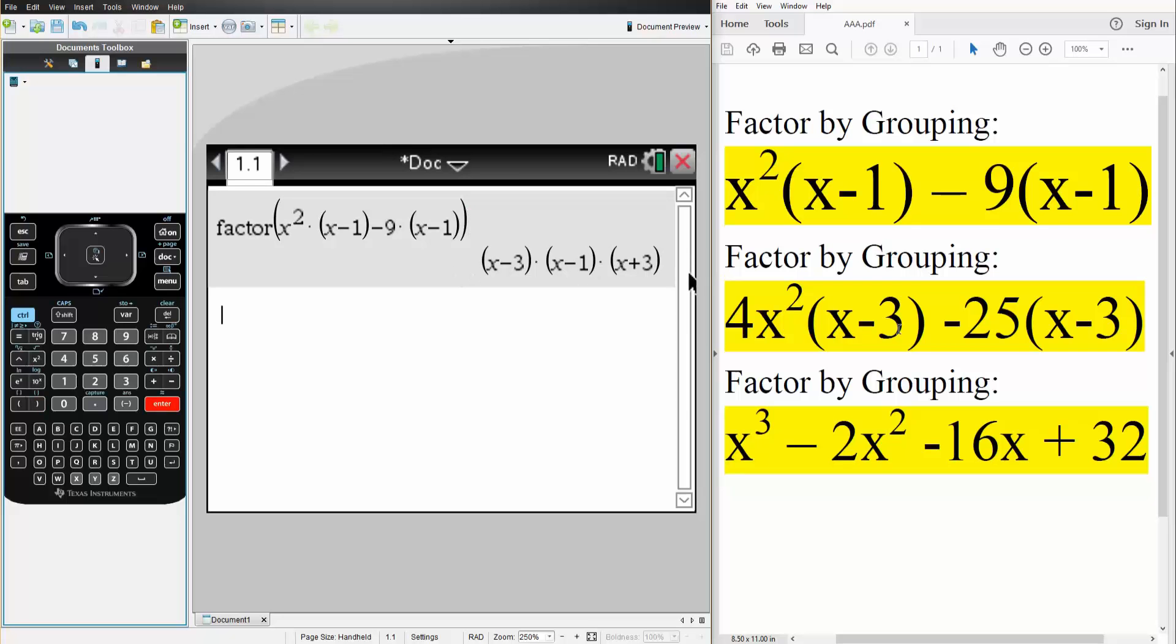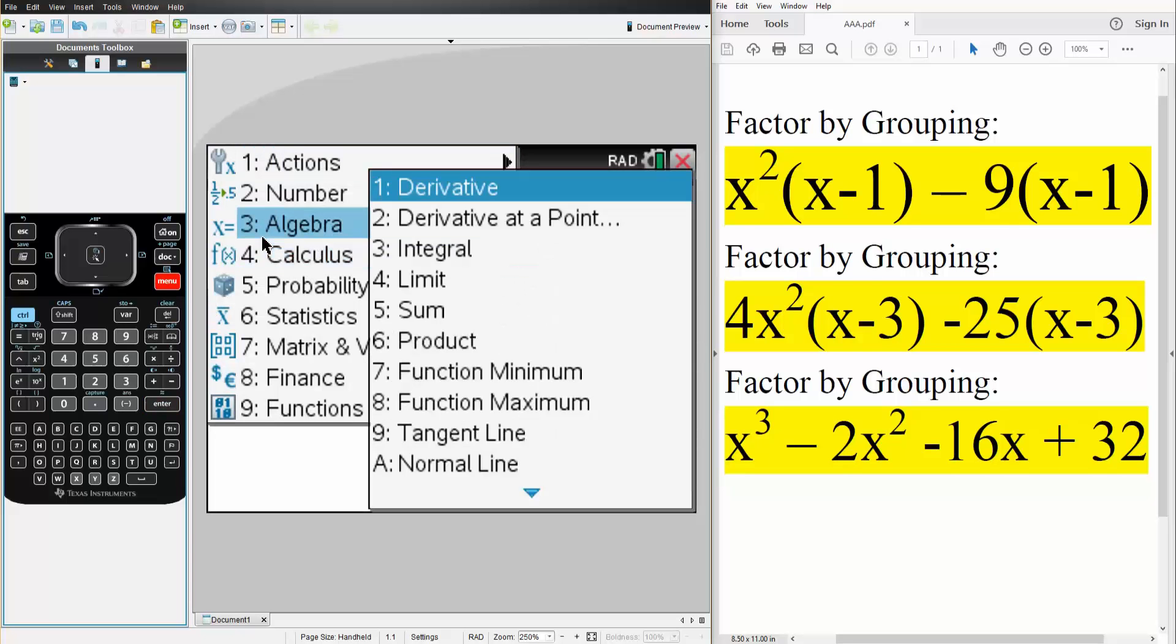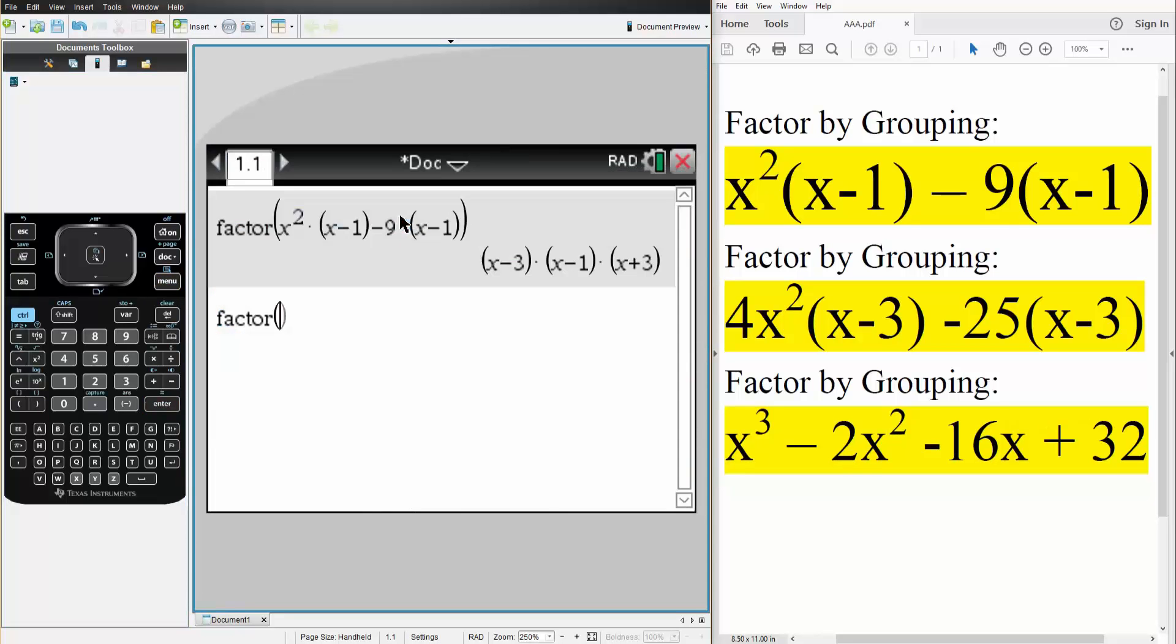Next, we'll do this problem. Same exact method. Menu, 3 algebra, 2 factor. We have 4 times x squared times parentheses x minus 3 minus 25 times parentheses x minus 3. And we simply hit enter, and this would be the final answer, which is factored completely.